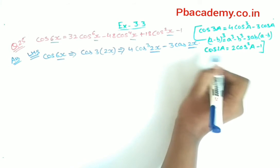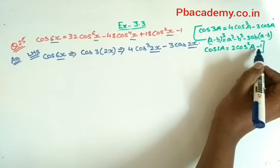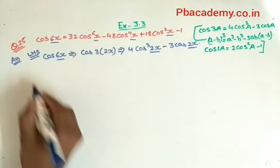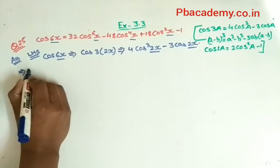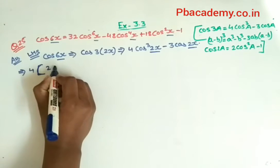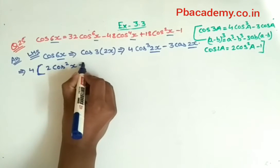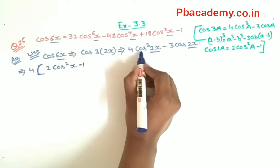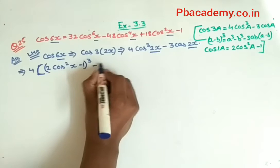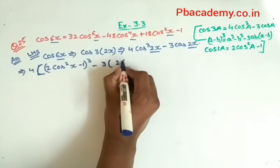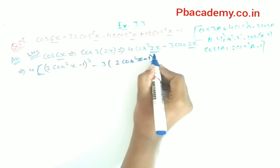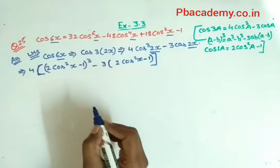I will use the identity cos 2a = 2 cos²a − 1 in both places using the same identity. It will become 4 times (2 cos²x − 1)³ minus 3 multiplied by (2 cos²x − 1). Please notice that here we have cos³, so I will use the whole cube identity (a − b)³ on this part.